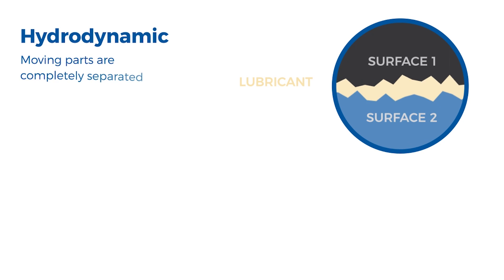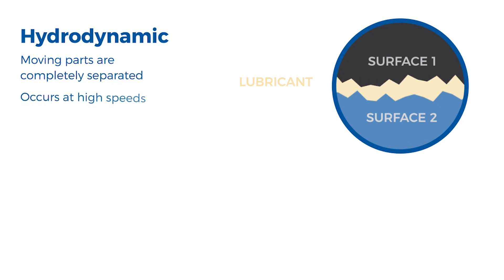During hydrodynamic lubrication, moving parts are completely separated by a viscous fluid film. This regime typically occurs at high speeds.